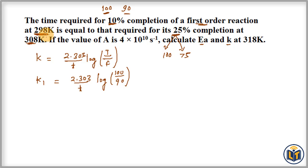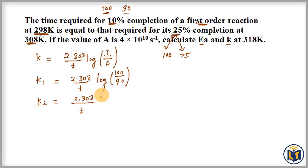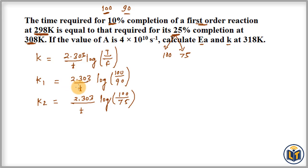At the second temperature T2, the rate constant is K2. We write: K2 = (2.303 / t) × log(100 / 75). Now we simplify these two expressions to find the ratio K1/K2, which is needed for the Arrhenius equation to calculate the activation energy Ea.